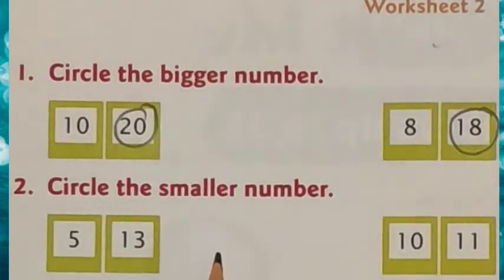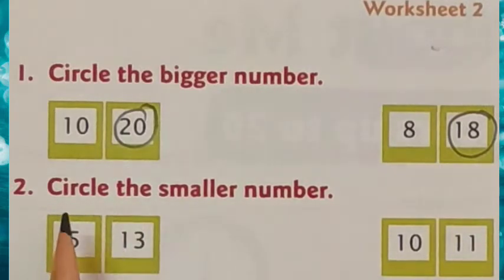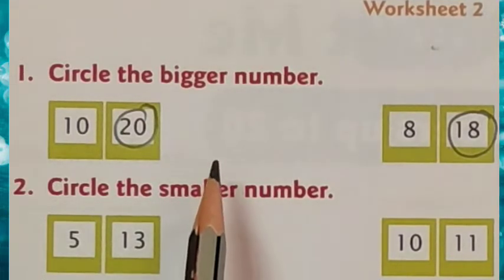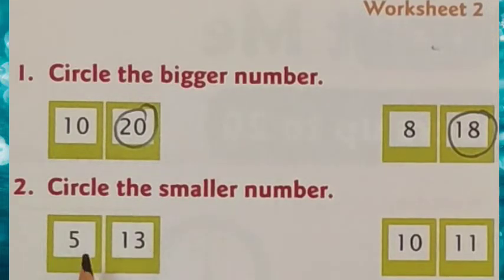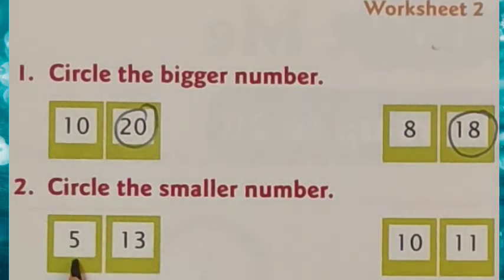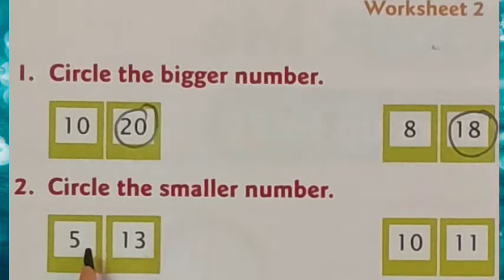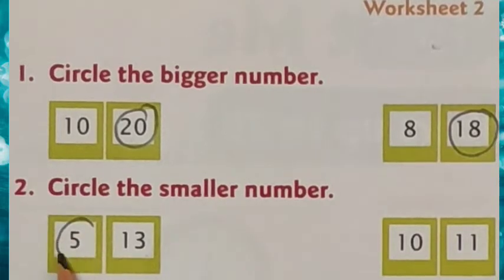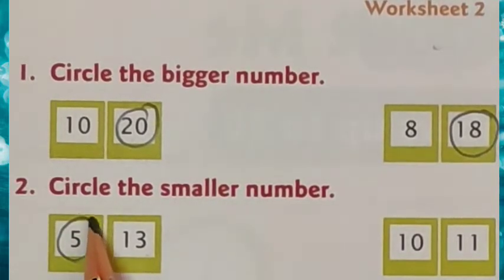Did you understand, children? Now let us move on to the second heading: circle the smaller number. The numbers given are 5 and 13. See here, 5 is a one digit number and 13 is a two digit number. When we compare a one digit number and a two digit number, the one digit number is smaller. So 5 is smaller than 13.